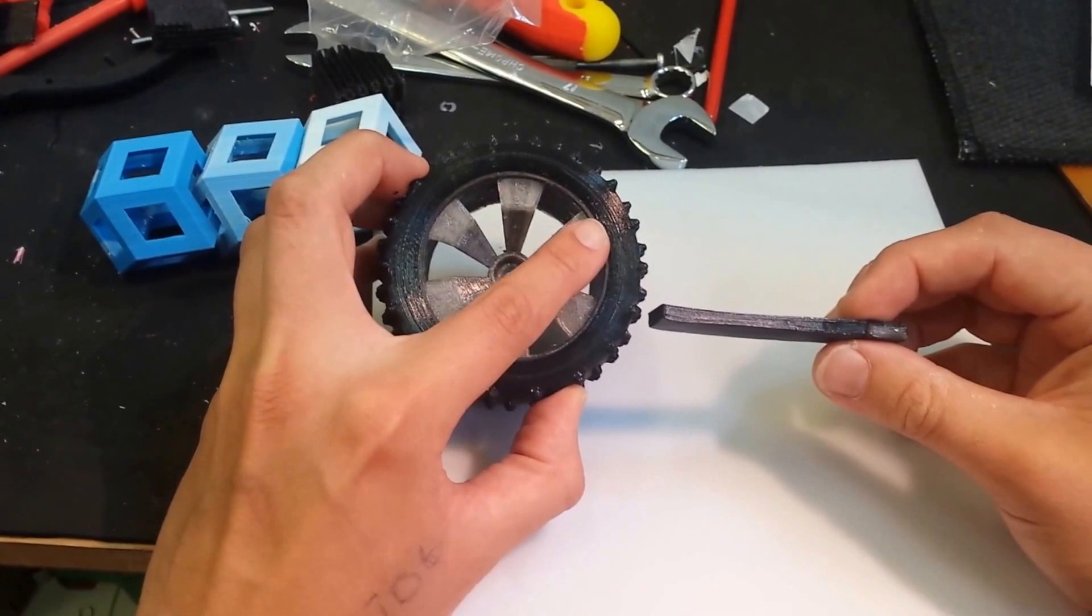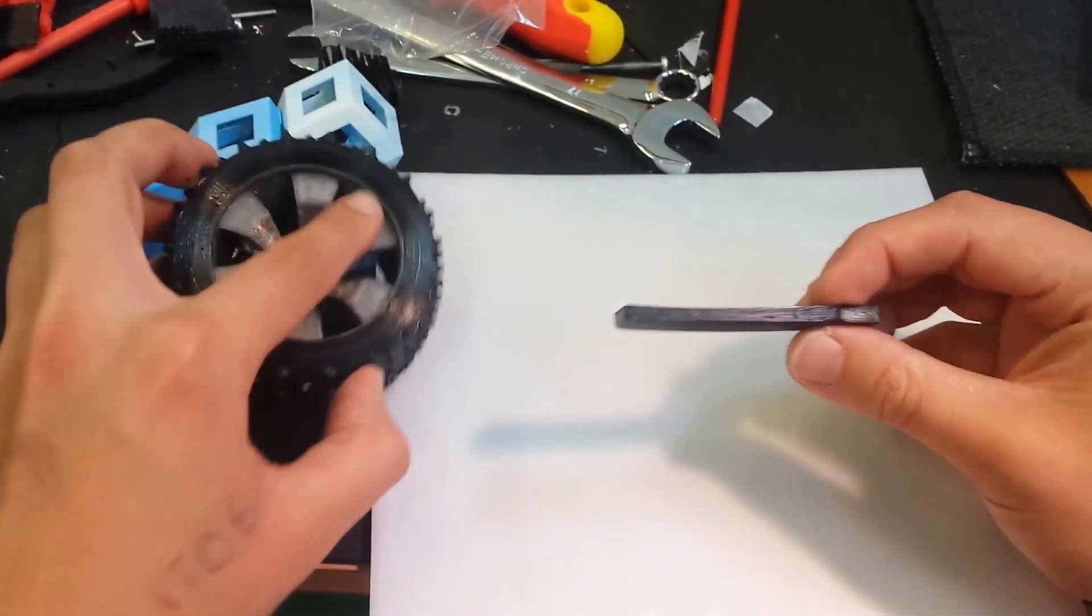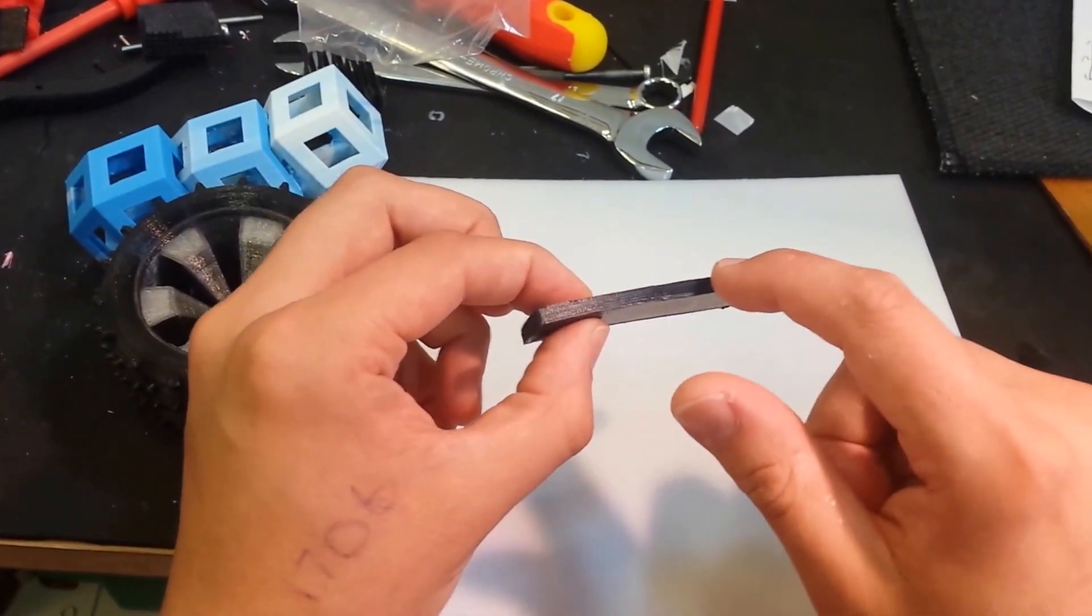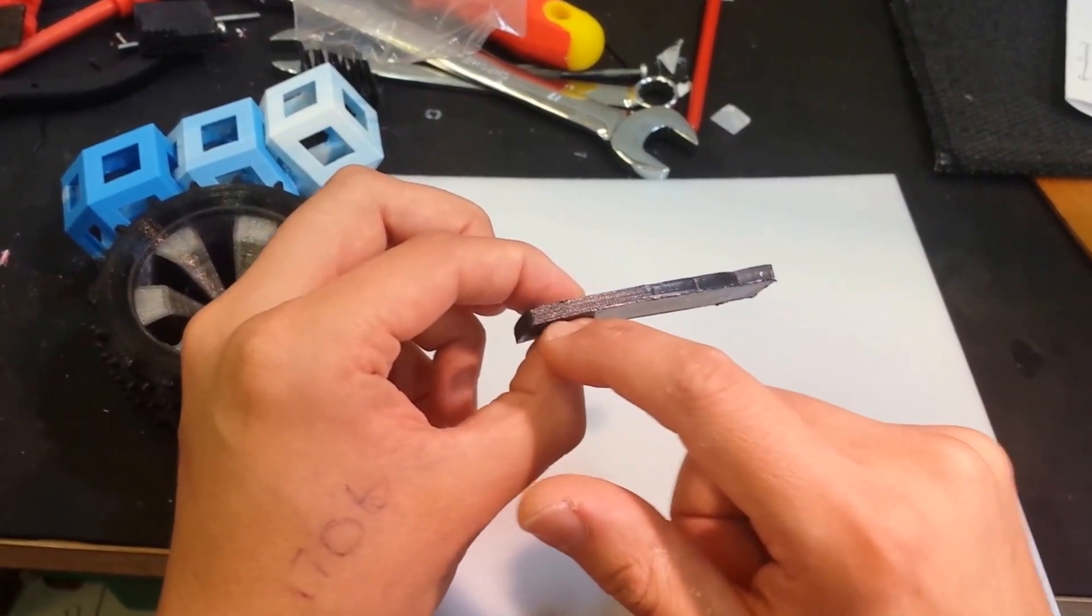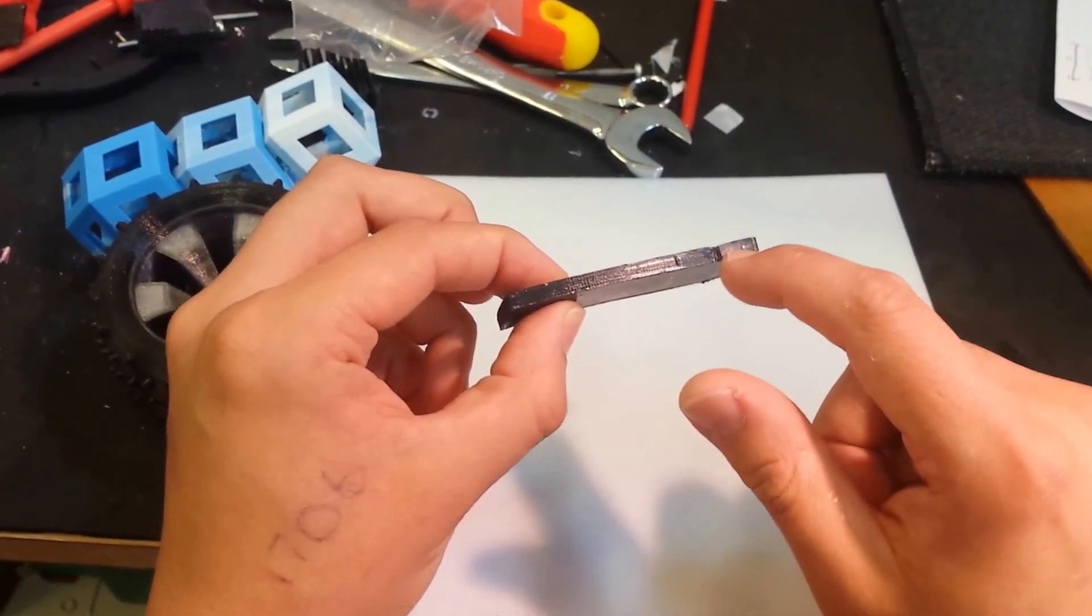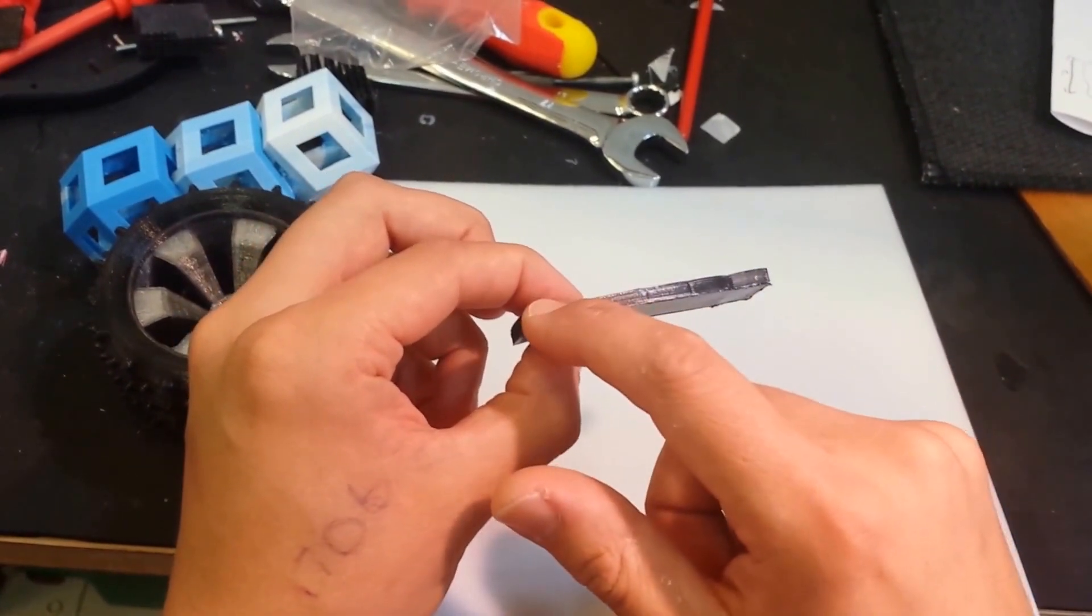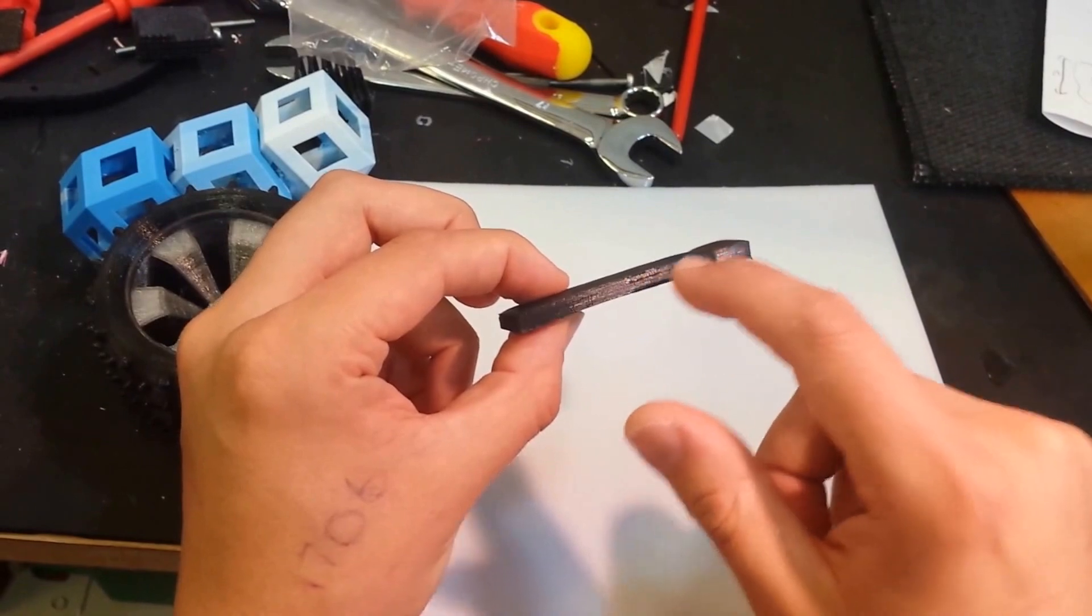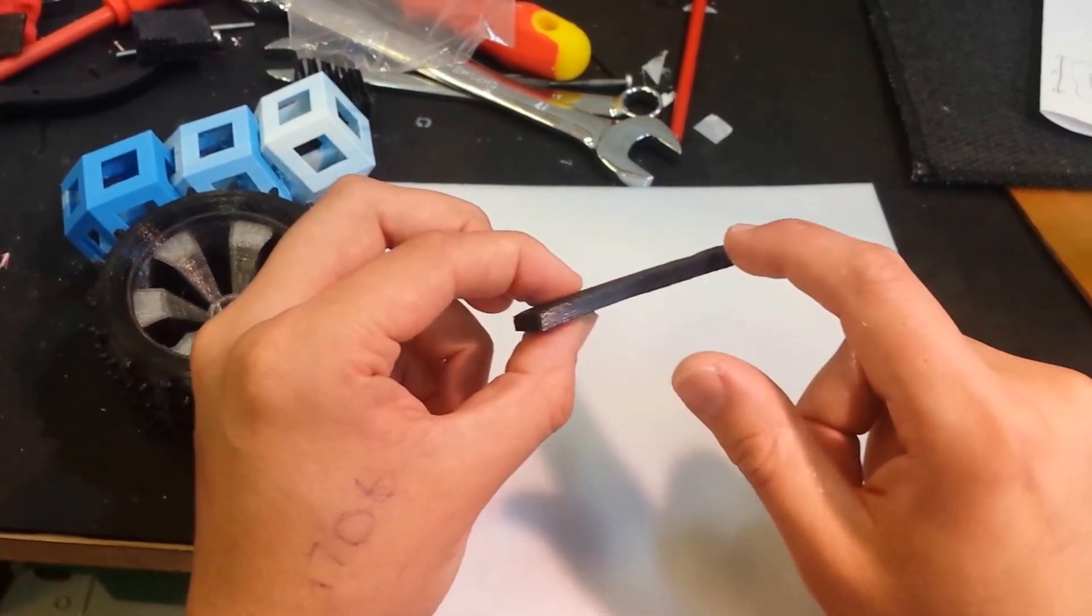And what we've done is printed a beam with a variable mix of rigid material at this end, flexible material at this end, and we vary the amount of the ratio of the mixture in a gradient as we go along.